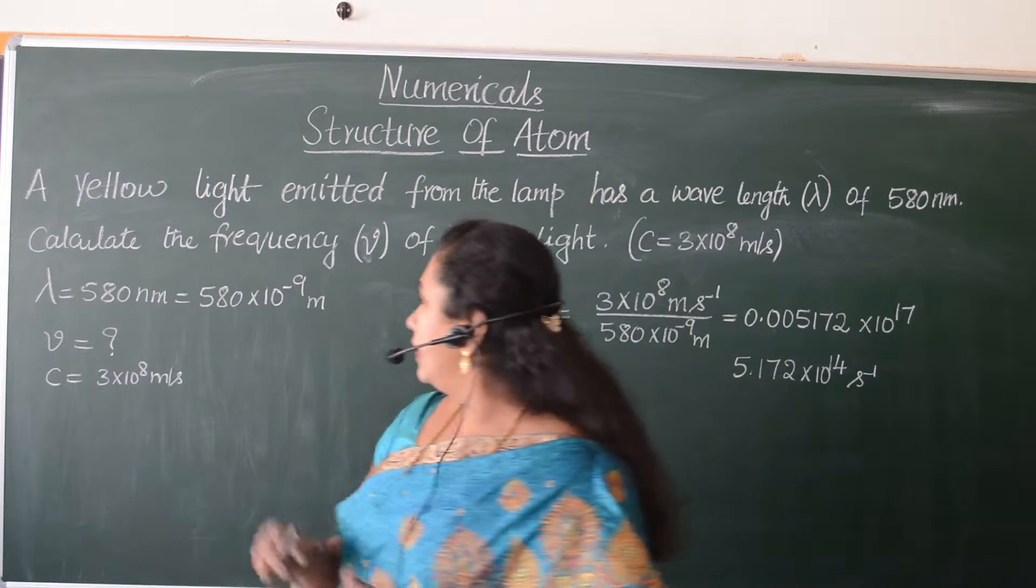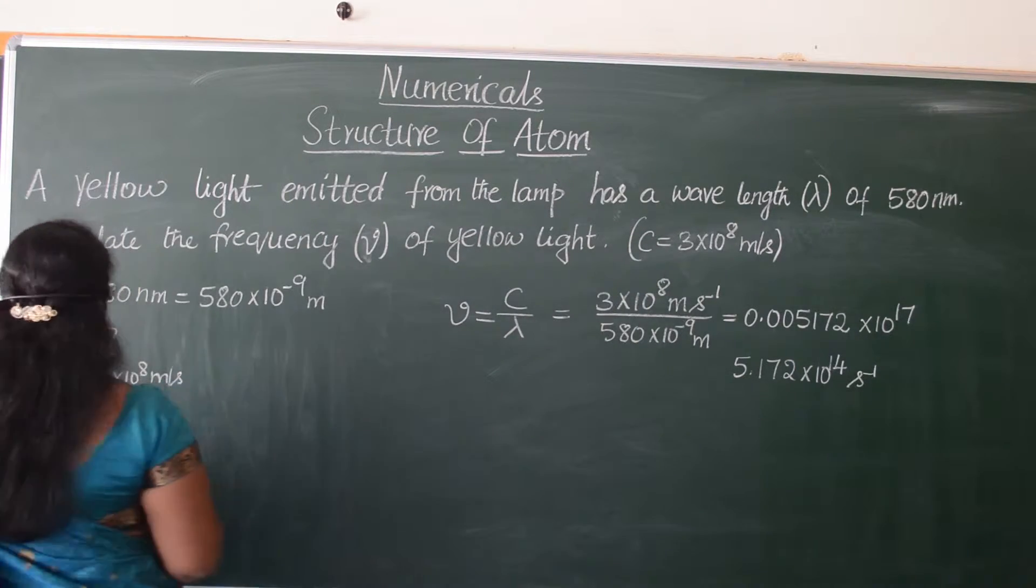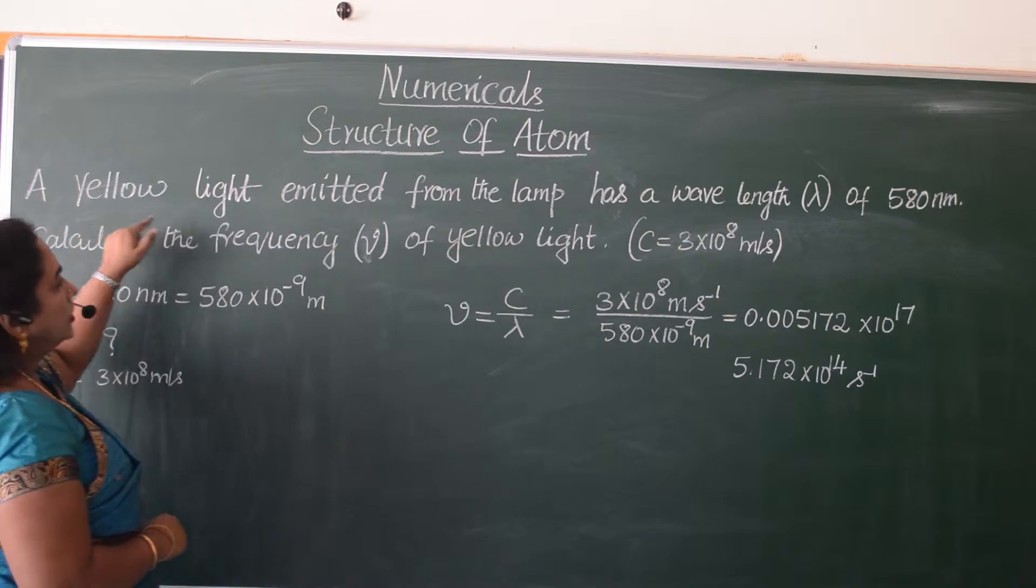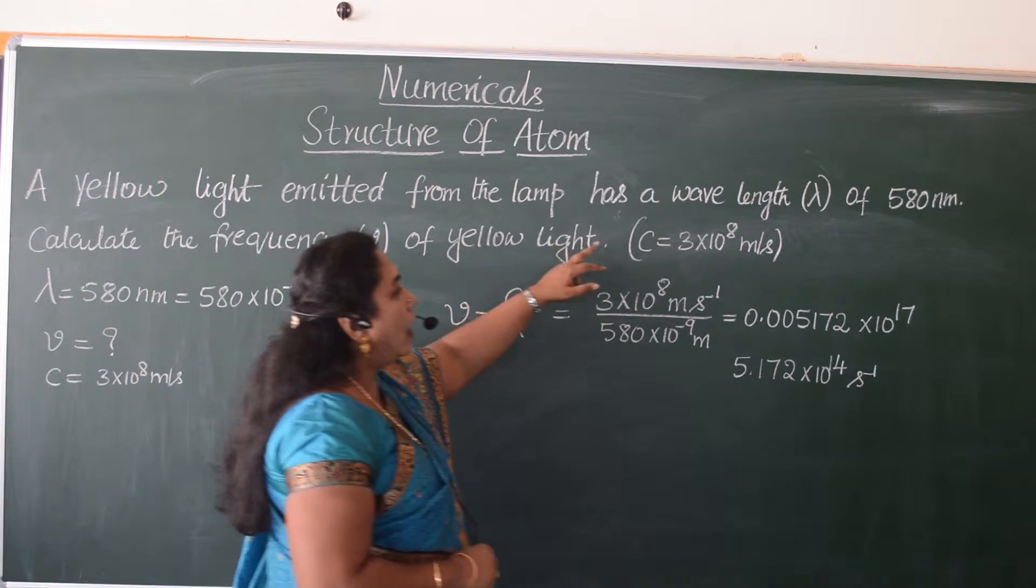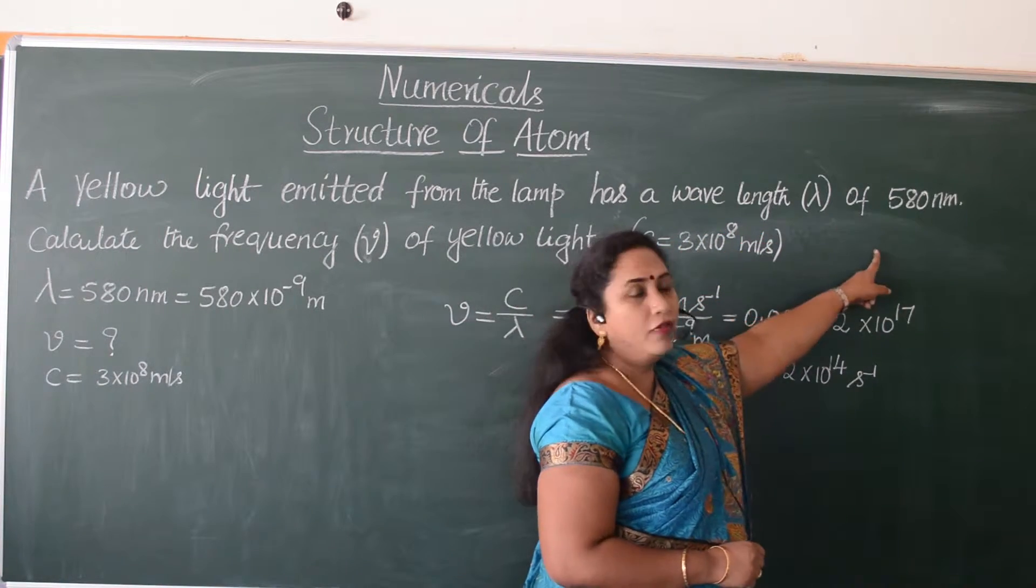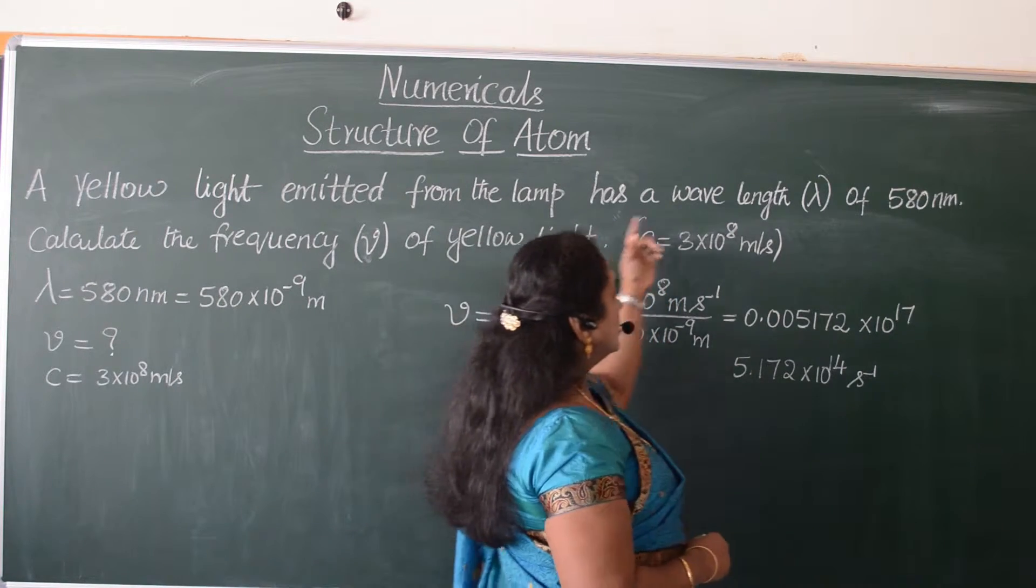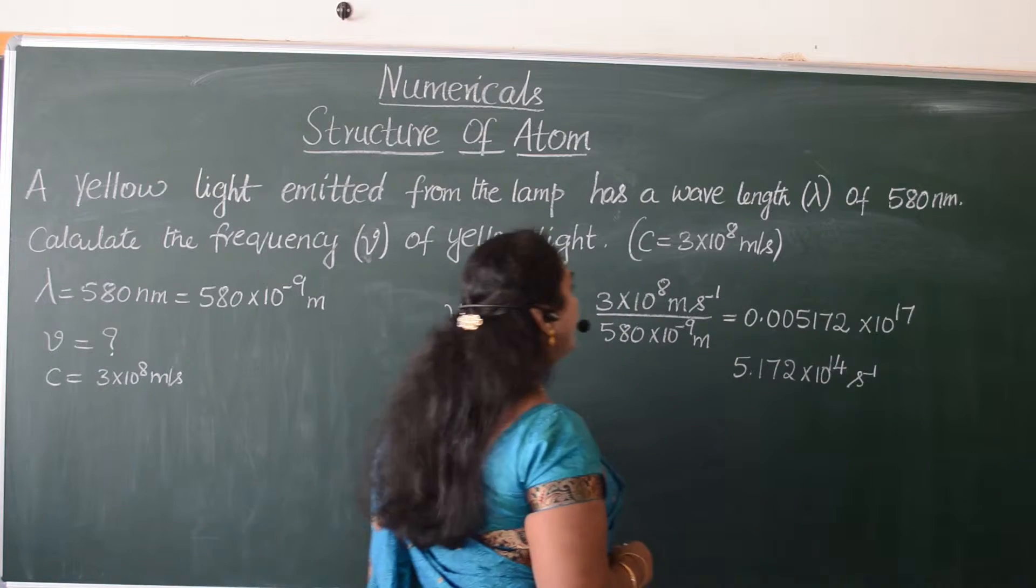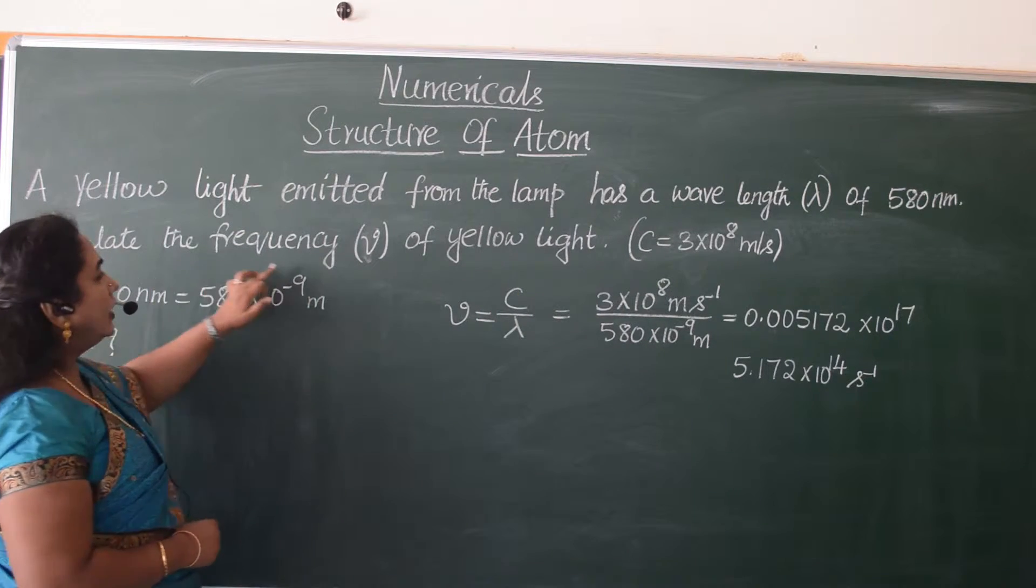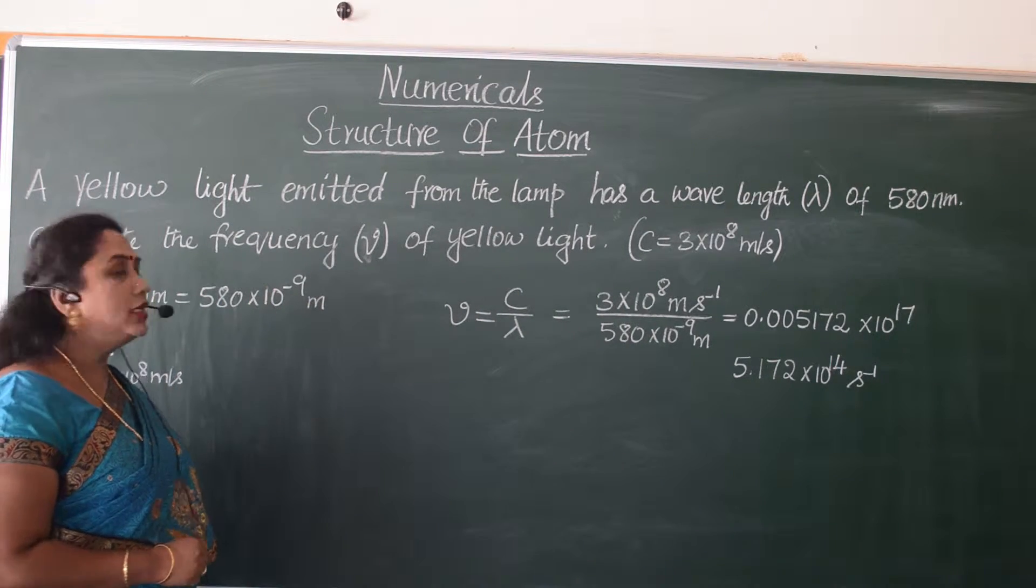Let's look into this question. A yellow light emitted from the lamp has a wavelength of 580 nanometers. Wavelength is denoted by lambda. Calculate the frequency of yellow light.